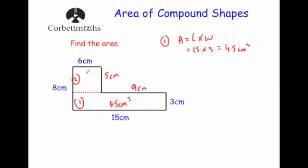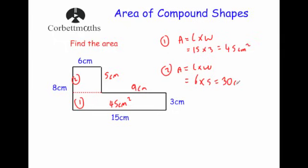For rectangle 2, area equals length times width. Tracing around that section, the length is 6 and the width is 5 — the 8 goes beyond it. So we do 6 times 5, which gives 30 centimeters squared.